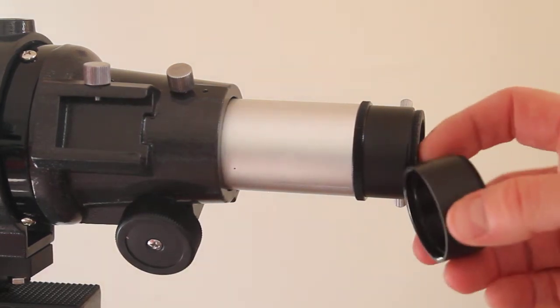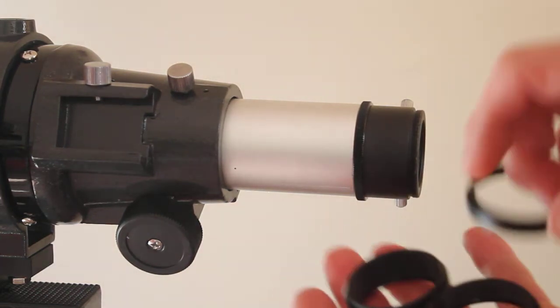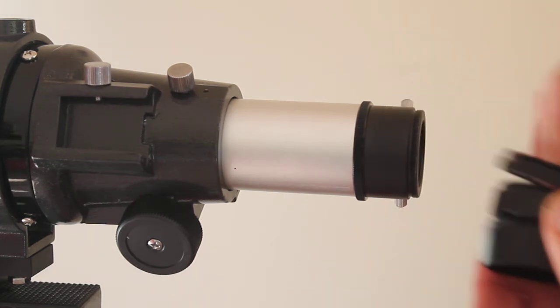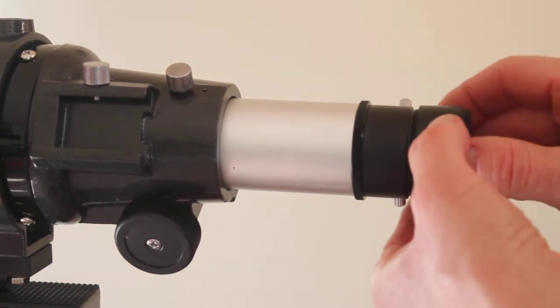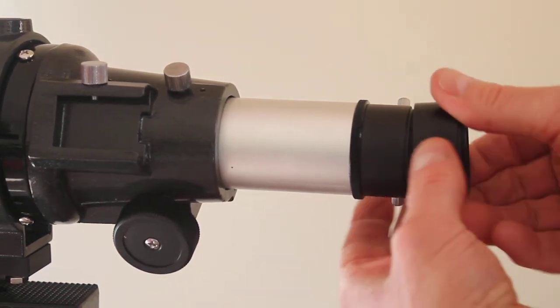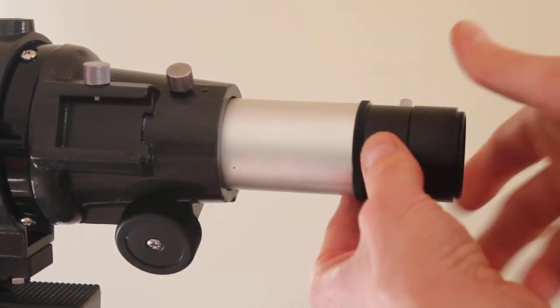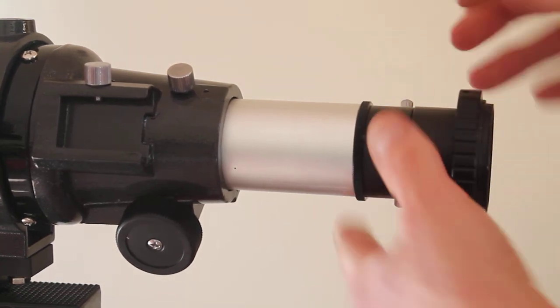You get them in all different sizes. You can put them on one by one or put them together, depending on how much outward focus you need. Screw the T2 extension on where you put the T-ring, and put the T-ring into the extension.